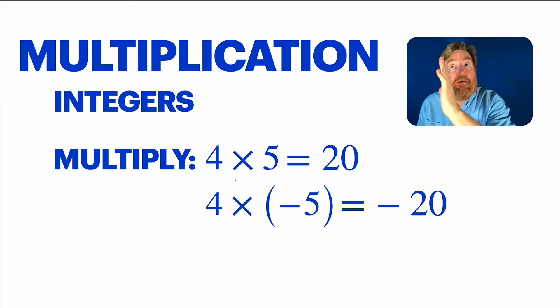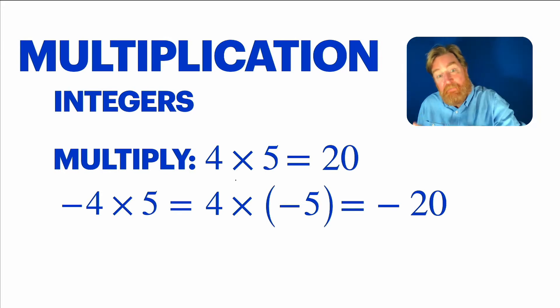It turns out that's negative 20. And you might even be able to see why just looking at four times negative five is really negative five added four times. Negative five plus negative five plus negative five plus negative five. It makes sense that we're getting negative 20. By the way, it's the same if we did negative four times five. You get negative 20. If exactly one of the factors is negative, the result is negative.